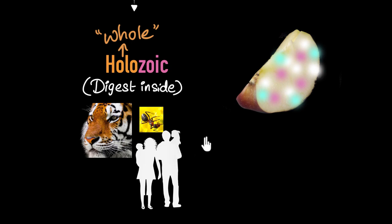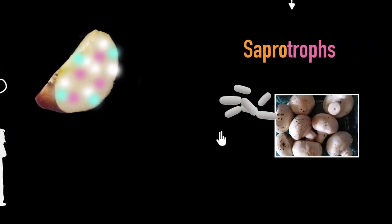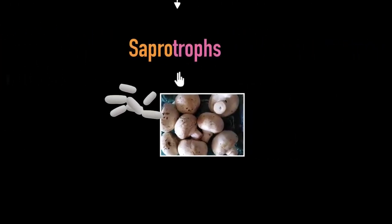But what if you don't have a good digestive system? Then what happens? Well, then you become a saprotroph. Saprotrophs are the ones that don't have a good digestive system. And as a result, they digest the food outside of their body and then eat it. And as we will see, it's these guys who are responsible for rotting and decaying things.